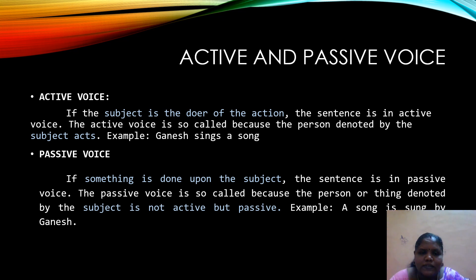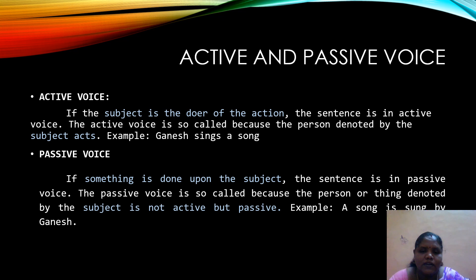By definition, active voice is when the subject is the doer of the action. If something is done upon the subject, the sentence is in passive voice. For example, in 'Ganesh sings a song,' the subject Ganesh does an action called singing. Whereas in 'A song is sung by Ganesh,' the subject 'a song' is not the doer but the result of the action. The active voice is so called because the subject acts, whereas in passive voice the subject is not performing an action.